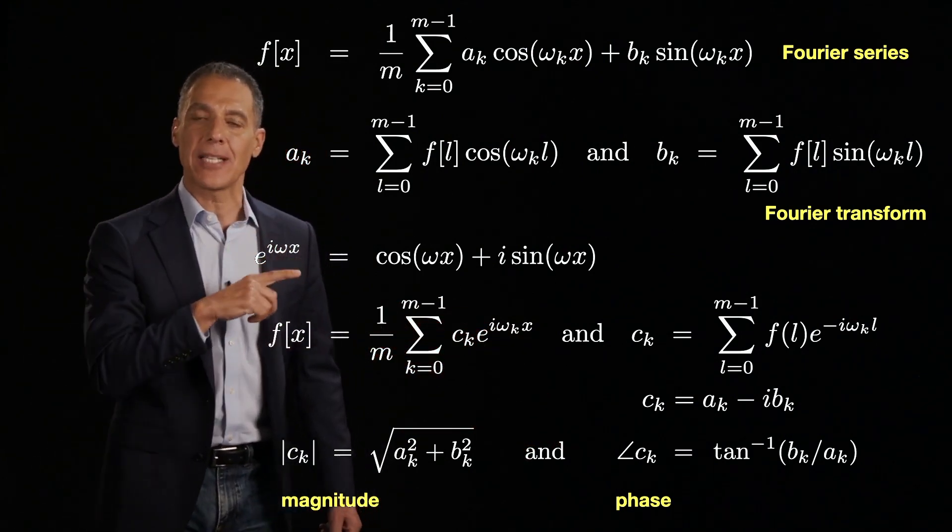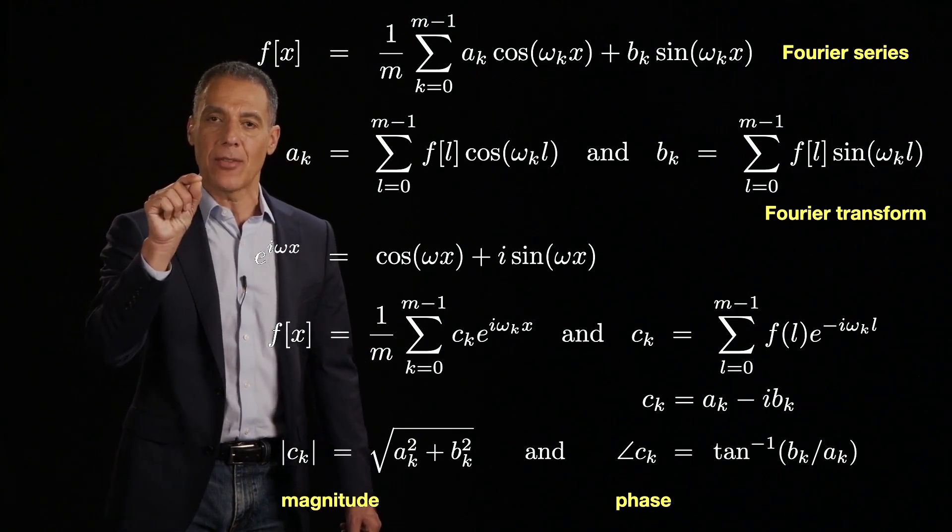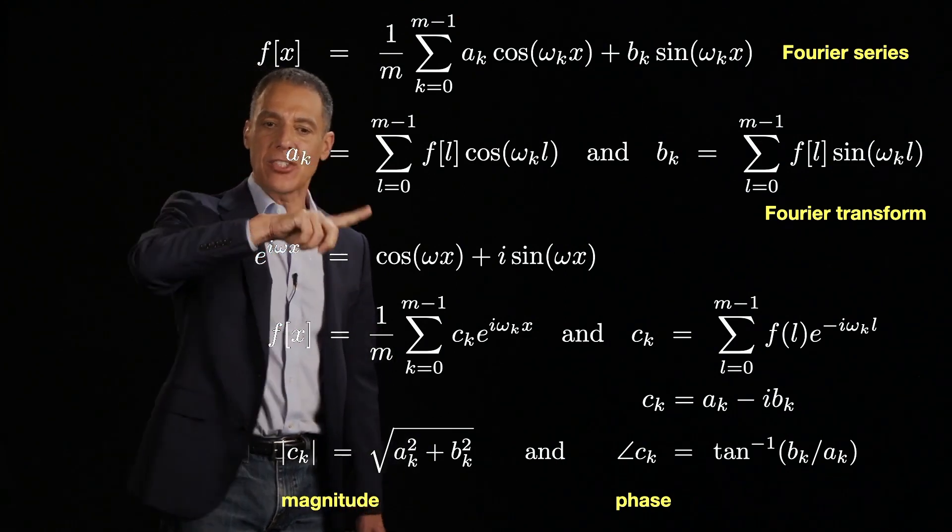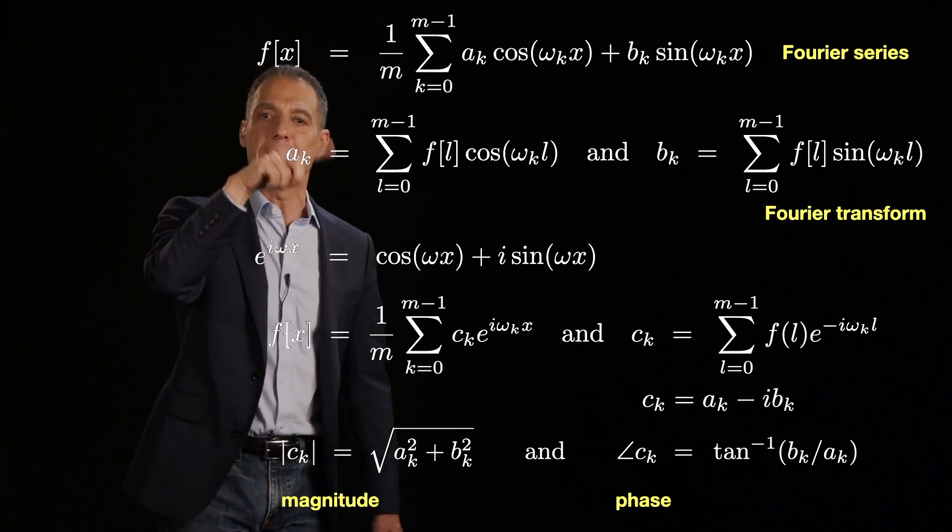More often, we are going to represent this in terms of magnitude and phase. So think of that c_k as a vector in a complex plane. You've got the real axis on the horizontal axis. You have the imaginary axis on the vertical axis.